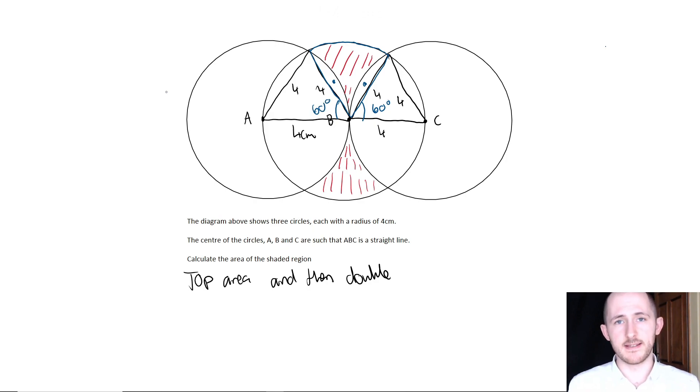Well, for an equilateral triangle all of the angles are 60 degrees, right? Now angles on a straight line add up to 180, so 60 plus 60 is 120. That means this angle here for the sector must also be 60 degrees.